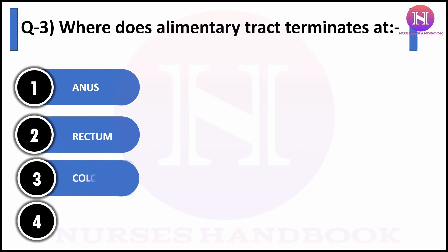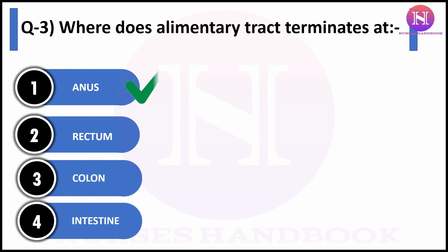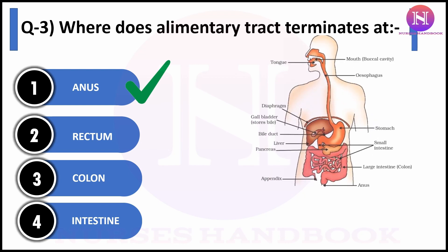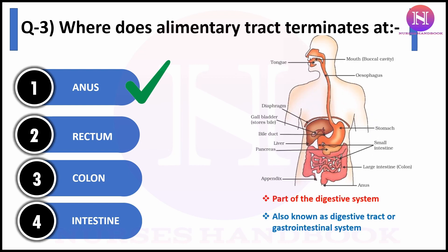Question number three: where does the alimentary tract terminate? Option one: anus, option two: rectum, option three: colon, option four: intestine. The correct answer is anus. The alimentary canal or alimentary tract starts with the mouth, then passes through the esophagus, stomach, small intestine, large intestine, and rectum, and then terminates at the anus.